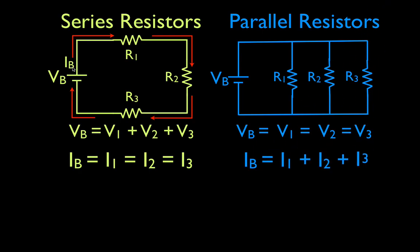For parallel resistors it's of course a little different. You can see we really have three loops — loop number one, loop number two, and loop number three. The current rule says that the current out of the battery is equal to the current that flows through resistor number one plus the current that flows through resistor number two plus the current that flows through resistor number three.